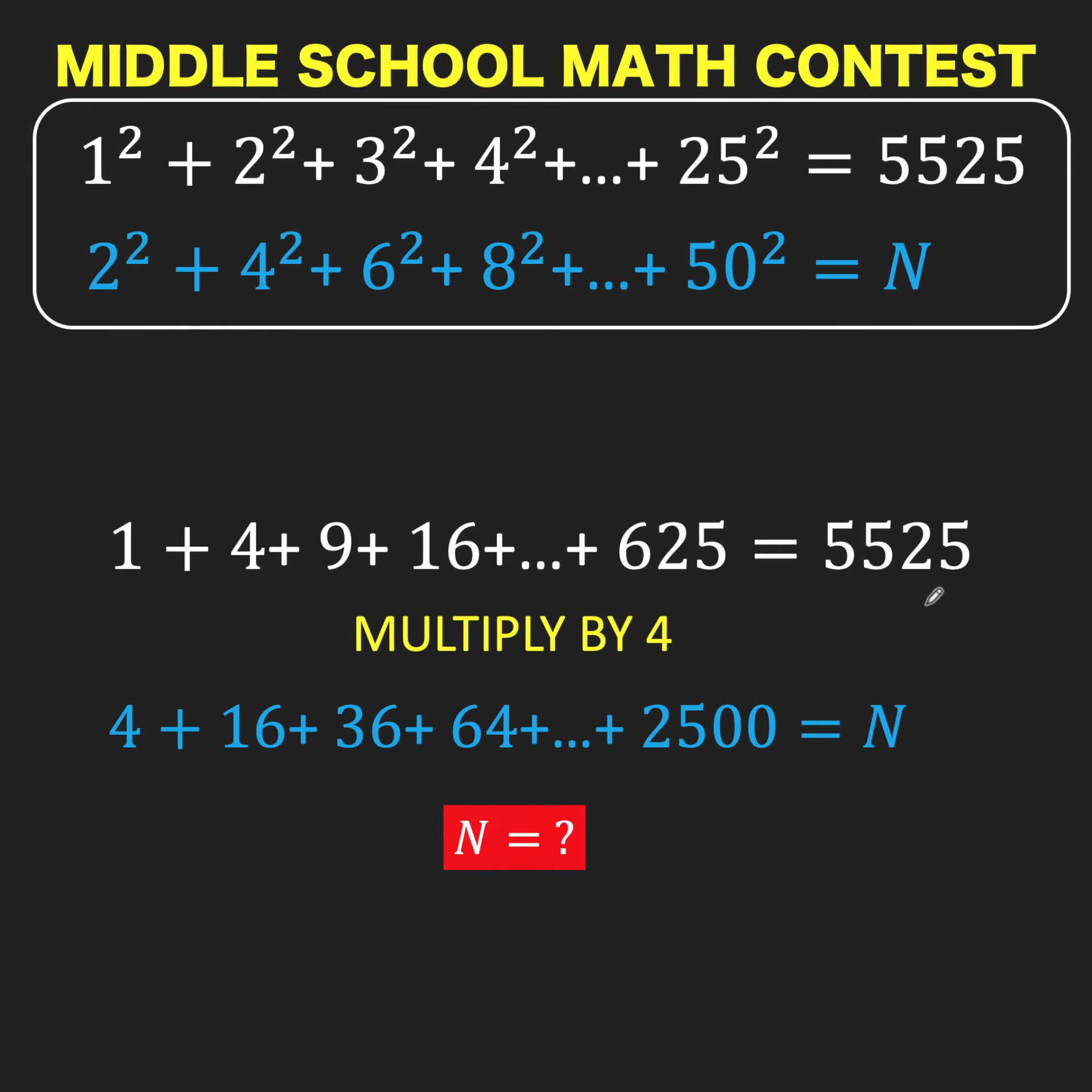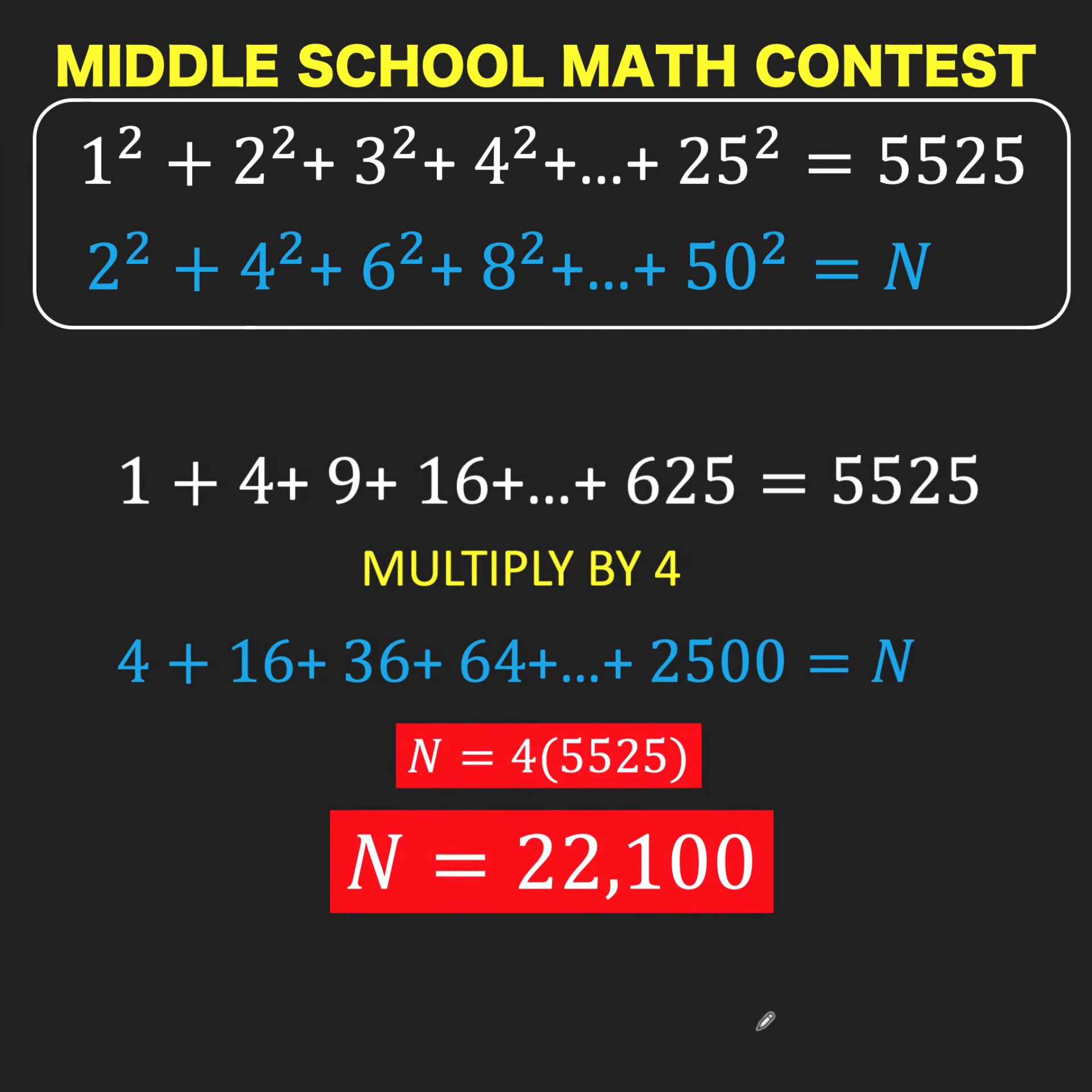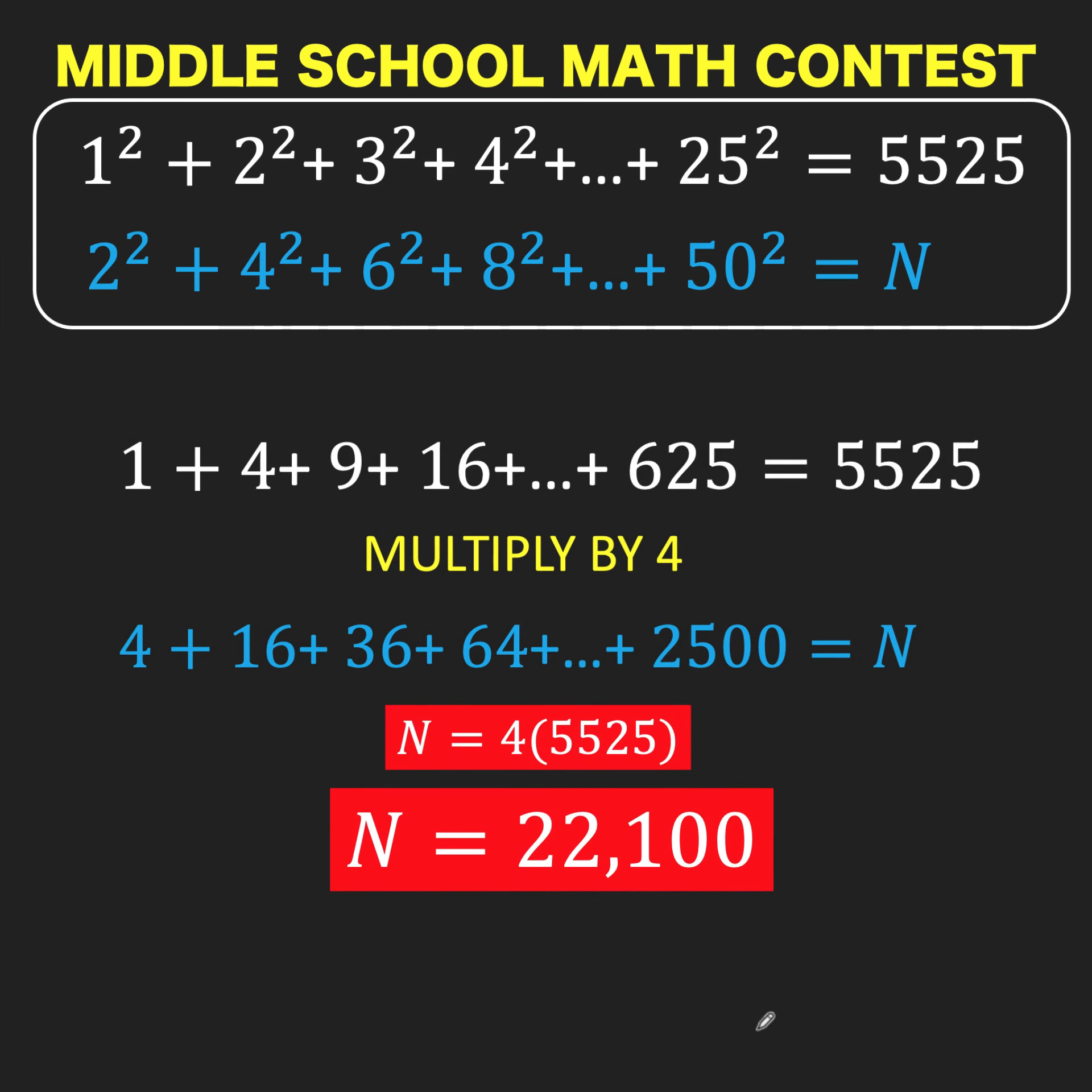Therefore, N is 4 times 5,525, which equals 22,100. This is the answer to this math question.